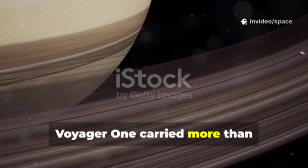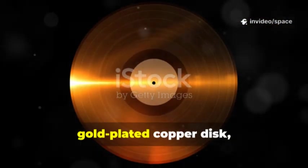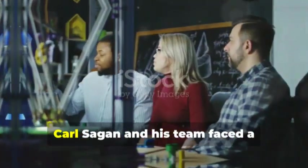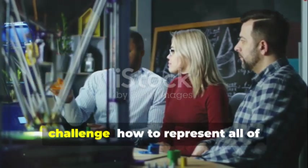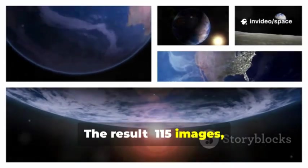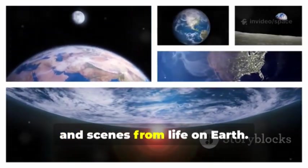Voyager 1 carried more than instruments. It carried a message, the golden record. A 12-inch gold-plated copper disc, designed to last a billion years in space. Carl Sagan and his team faced a challenge: how to represent all of humanity on a single record. The result: 115 images, diagrams of our solar system, DNA, human anatomy and scenes from life on Earth.